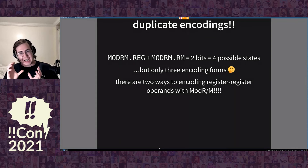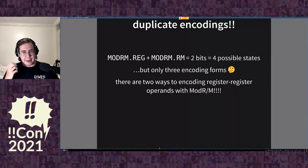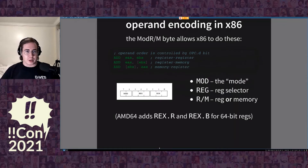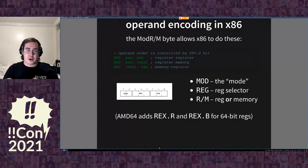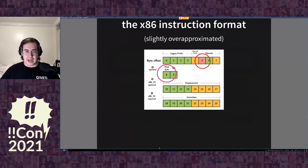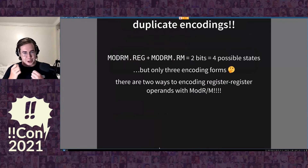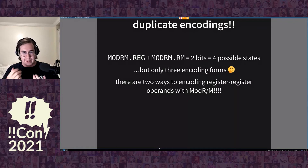A key thing is that ModRM reg and ModRM rm each encode four possible states, and yet there are only three encoding forms. The operand order — for example EAX, EBX as a register operand or memory operand — is controlled by the operand opcode direction bit. There's a bit inside the opcode byte that controls the direction of these operands. So there are actually four possible states but only three encoding forms, which means there are actually two different ways to encode register-register operands using the ModRM byte in x86. This isn't really documented anywhere, but it's a logical consequence of how the ModRM byte works with the direction bit inside of the opcode.